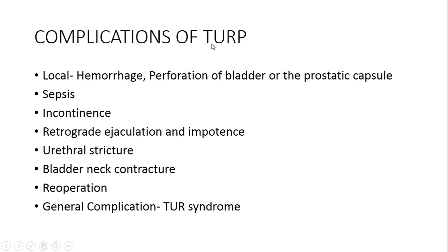Complications of TURP include local complications such as hemorrhage, perforation of the bladder or prostatic capsule, sepsis, urethral stricture, bladder neck contracture, incontinence if resection extends beyond the verumontanum, retrograde ejaculation and impotence, and occasionally overaggressive resection of a small prostate. Re-operation is also a known complication — after 8 years, 15 to 18% of men with BPH will need re-operation. The general complication is TURP syndrome, which will be discussed in detail.